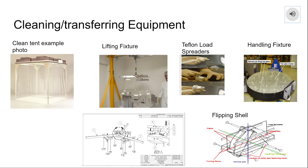Pictured here, starting from the left, is a modular soft wall clean room — a design similar to what we recommend, giving a good representation of what it might look like. Next to that is a lifting fixture, used to hold the mirror up whenever necessary without applying too much stress to it. The Teflon load spreaders are what attach the mirror to the lifting fixture using screws with magnets. The handling fixture is used whenever the mirror needs to be manipulated by hand, and the flipping shell is used to flip the mirror over whenever needed, which happens multiple times throughout the process.